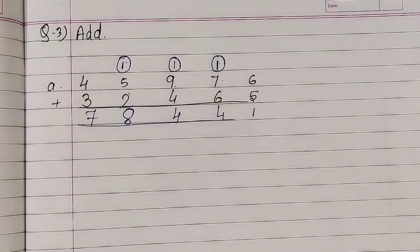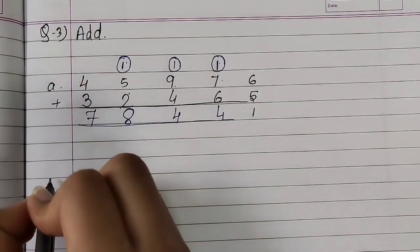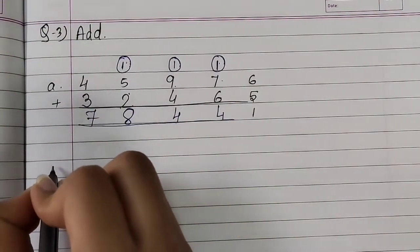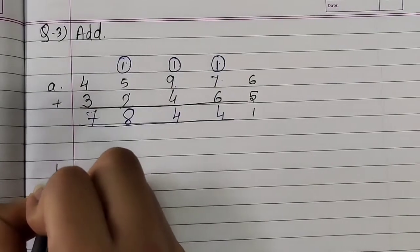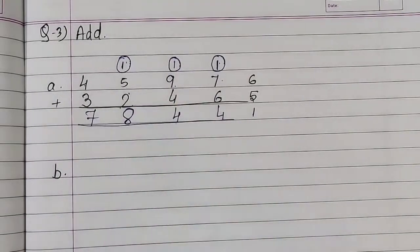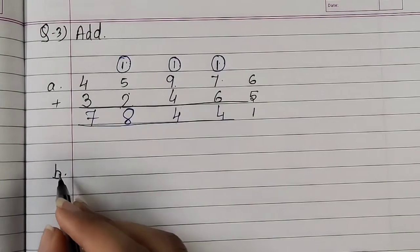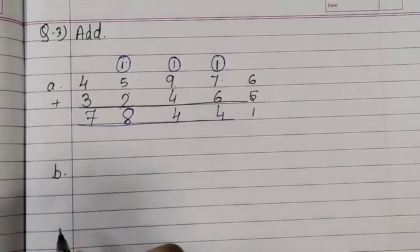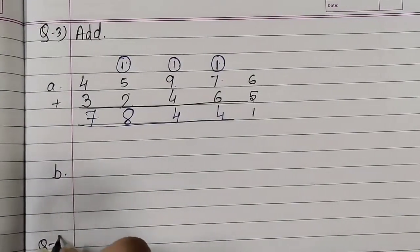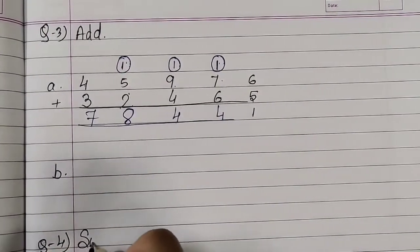In this way, we have to add the numbers. Number (b) you have to try on your own. Now moving to the next question — question number 4: Subtract.